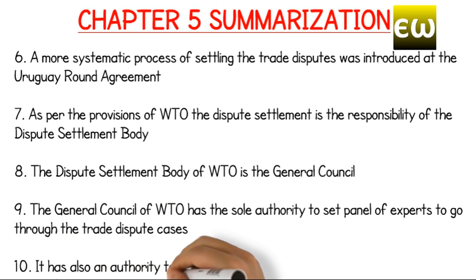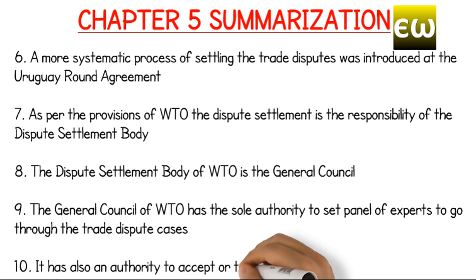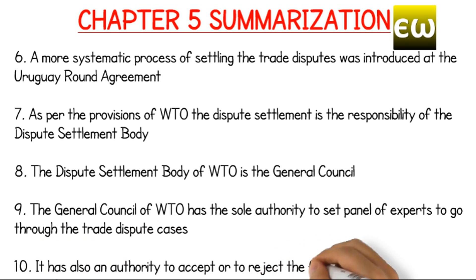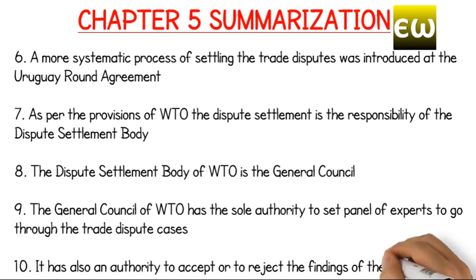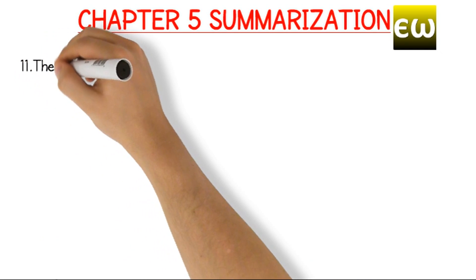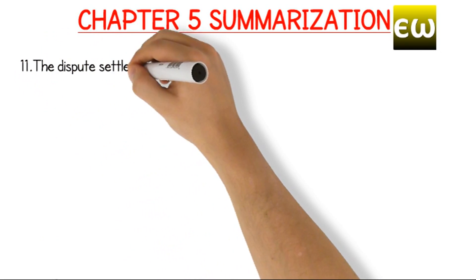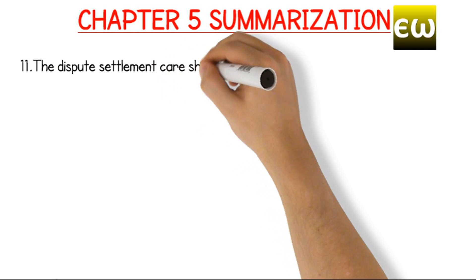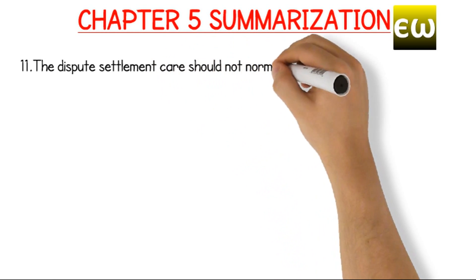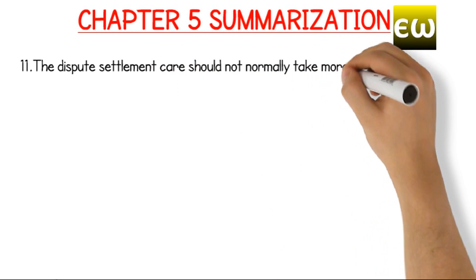The General Council is also the authority to accept or to reject the findings of the panel. The dispute settlement case should not normally take more than one year.